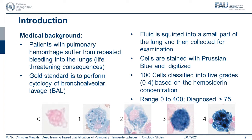The gold standard to detect and quantify this pulmonary hemorrhage is the performance cytology of the bronchial lavage fluid. For this, fluid is collected from the lung of the horse, afterward centrifuged, stained with, for example, Prussian blue, and digitalized with a whole slide scanner. Then, the trained veterinary pathologist counts 100 cells and classifies them into grades 0 to 4.